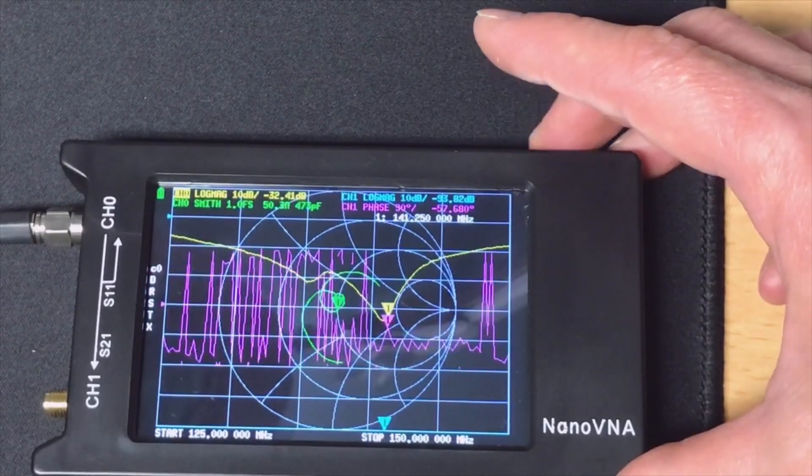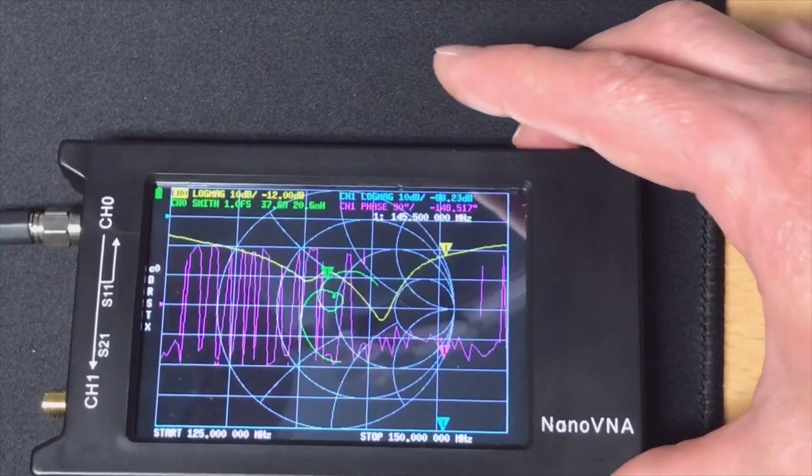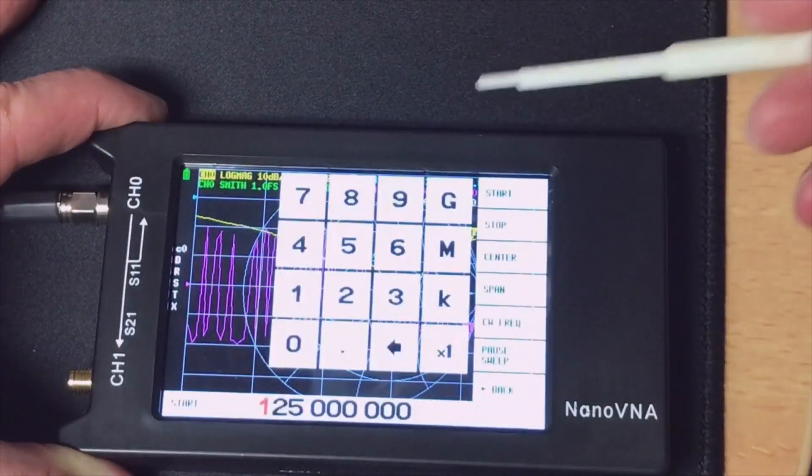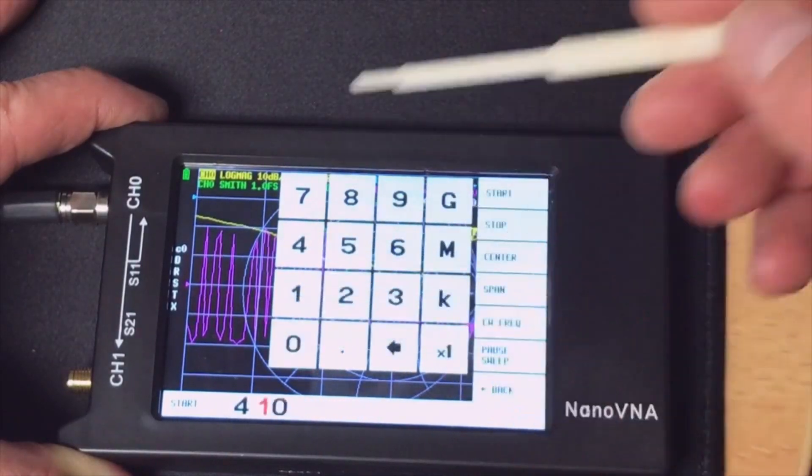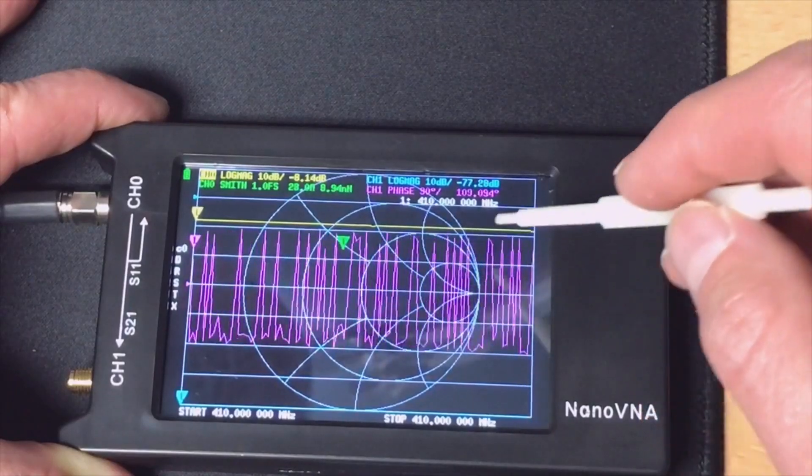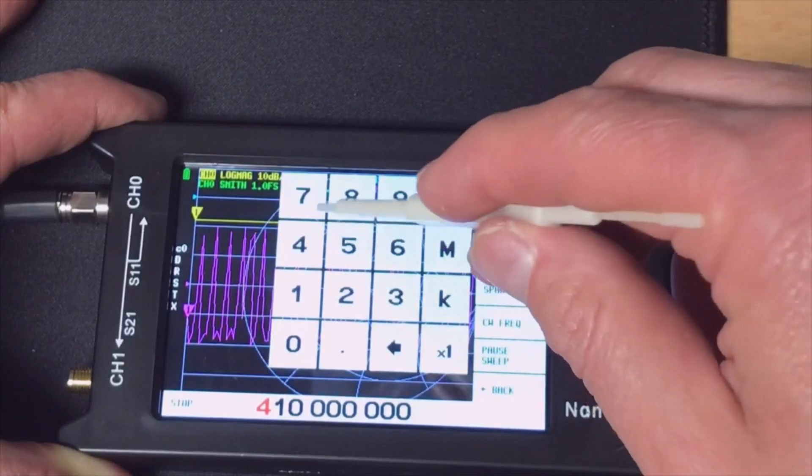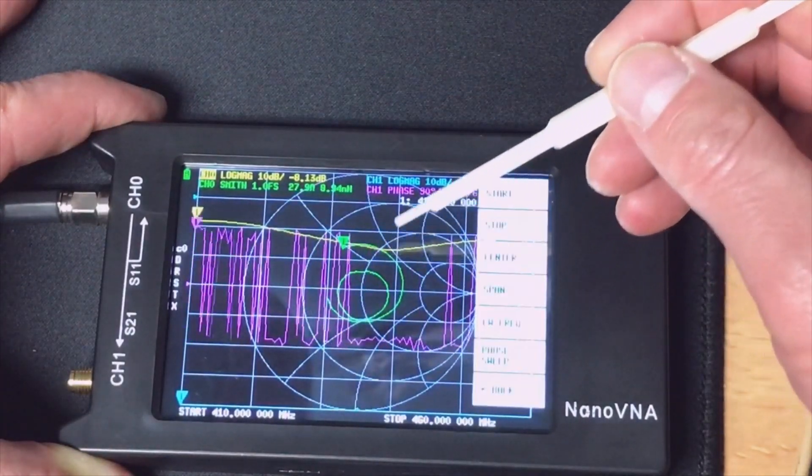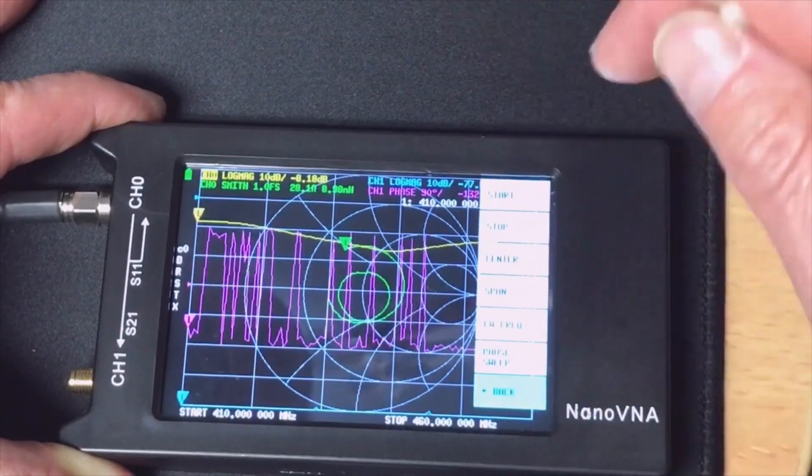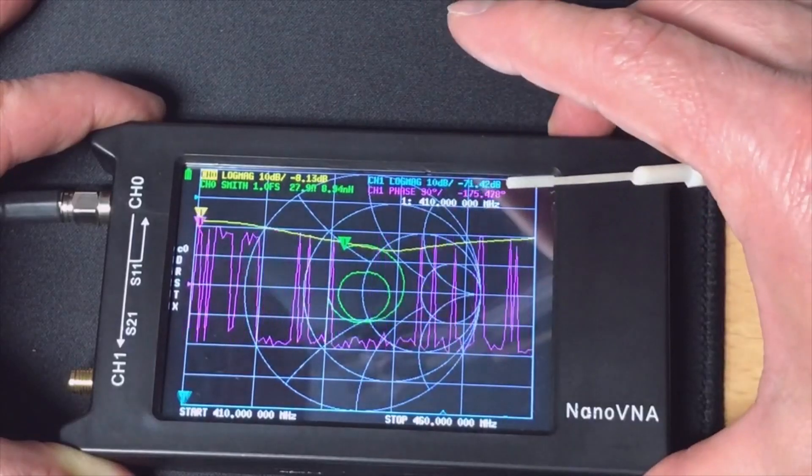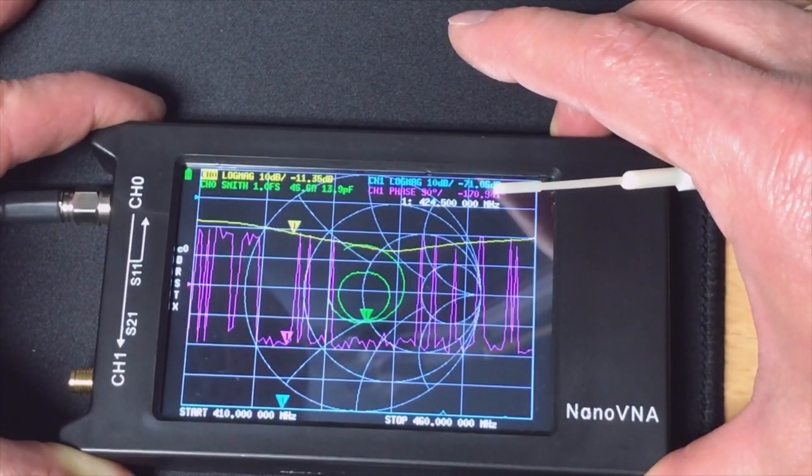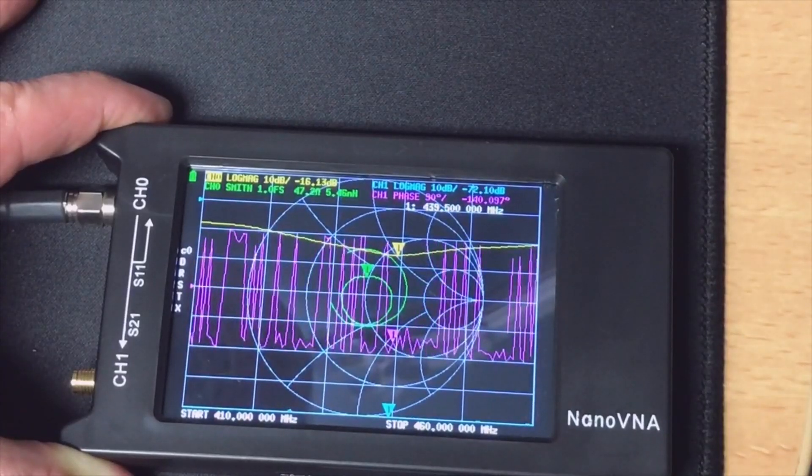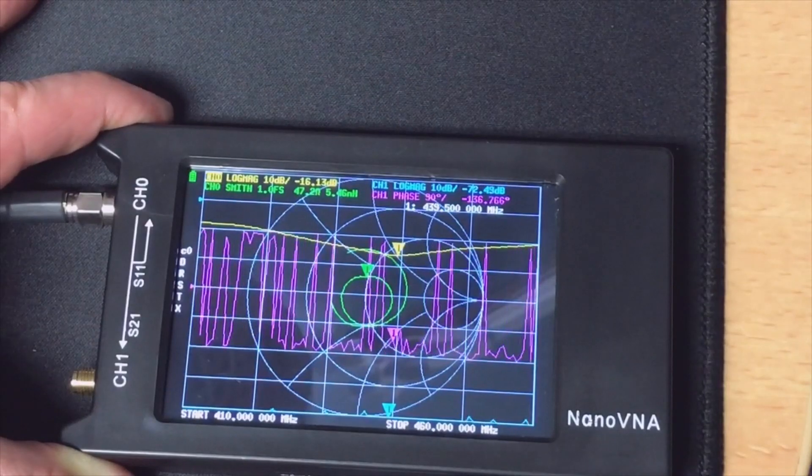We should have another dip in the 70 centimeters. I put the start frequency on 410, I'm not sure where the dip is, and then we go up to stop frequency 460. Yes, here we have another dip. We need to drag with the arrows. Here is our other dip, almost 50 ohms, frequency of 439 MHz. Well, that is good.